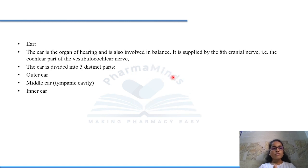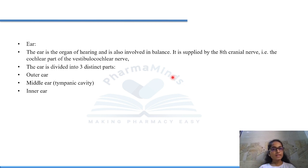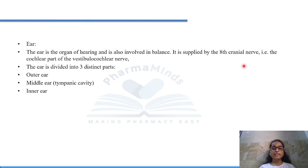Talking about ear — ear is the organ of hearing. It is also involved in balance. So it has two important functions: hearing and balance. It is supplied by the eighth cranial nerve, which is the vestibulocochlear nerve — specifically the cochlear part of the vestibulocochlear nerve.